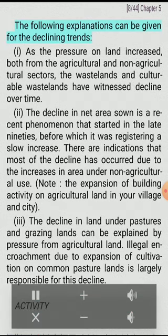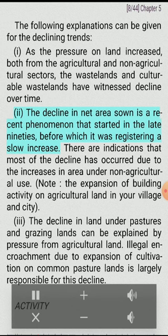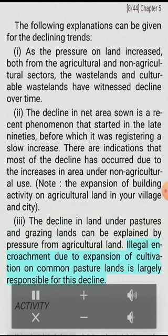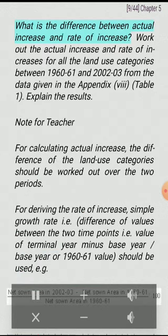The four categories that have registered a decline are barren and wasteland, culturable wasteland, area under pastures and tree crops, and net area sown. As the pressure on land increased from both agricultural and non-agricultural sectors, the wastelands and culturable wastelands have witnessed decline over time. The decline in net area sown is a recent phenomenon that started in the late 1990s, before which it was registering a slow increase. There are indications that most of this decline has occurred due to increases in area under non-agricultural use. The decline in land under pastures and grazing lands can be explained by pressure from agricultural land. Illegal encroachment due to expansion of cultivation on common pasture lands is largely responsible for this decline.